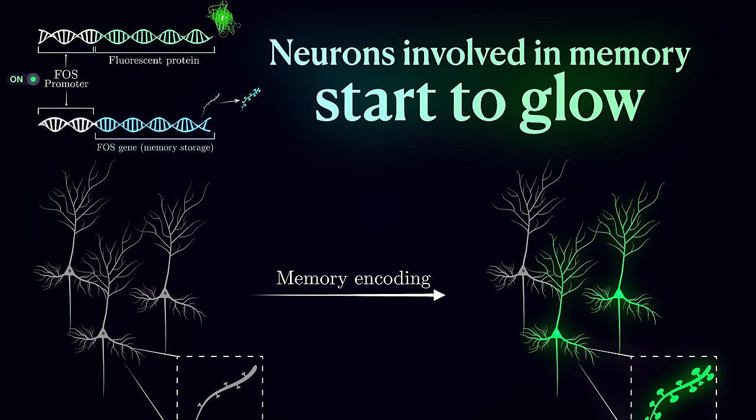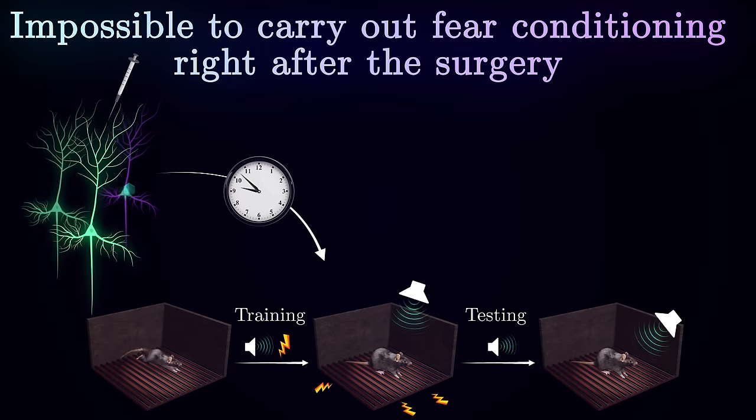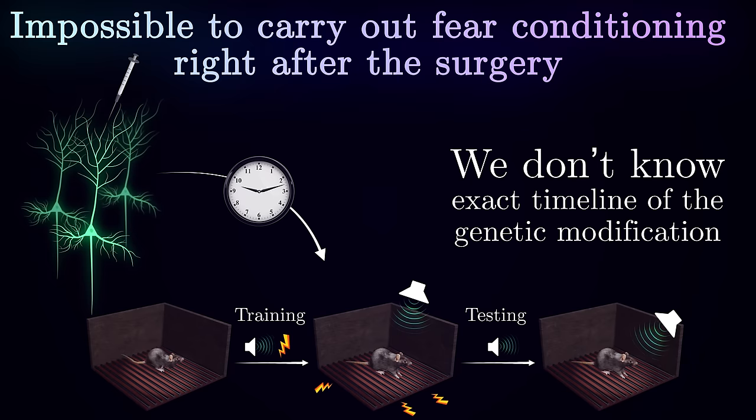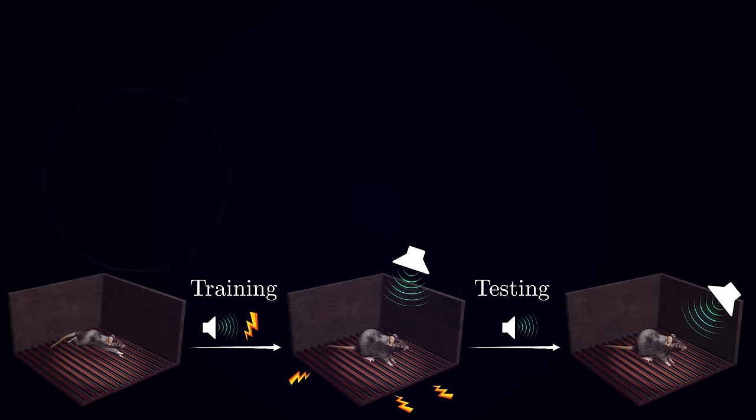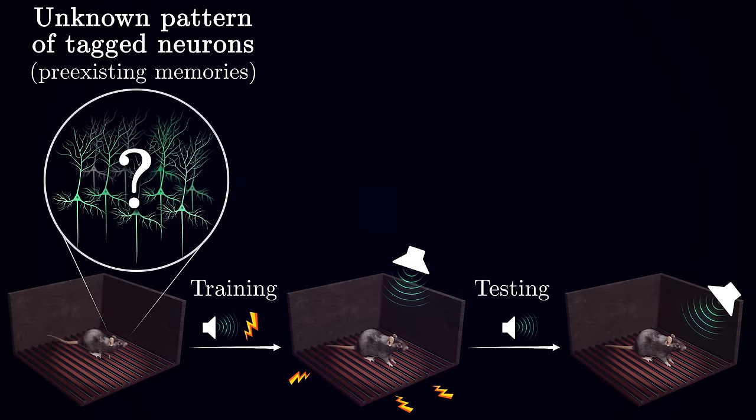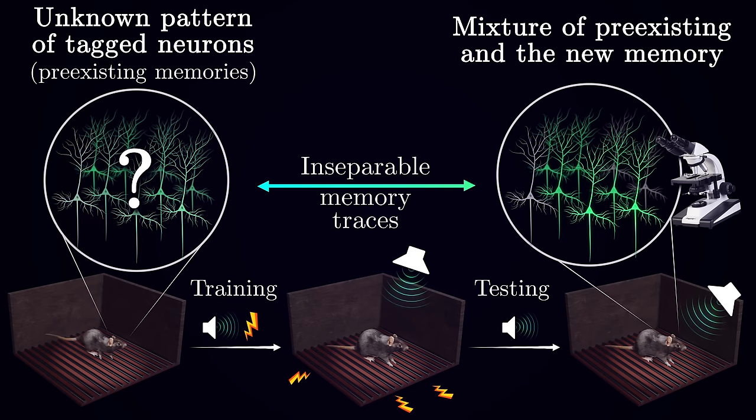But there is a very big problem with this simple configuration I've just described. Namely, it is impossible to carry out the fear conditioning right after the surgery, since the animals have to recover and the virus needs to spread around, which can take up to several weeks. But because it is impossible to tell when exactly the modification kicks in, by the time you put an animal into the experimental apparatus, it may have already formed a multitude of other memories, for example, while sitting in its home cage. So, under the microscope you'd see many glowing neurons marked for immediate early genes, and it would be impossible to tell which of them correspond to the associative memory we are interested in.